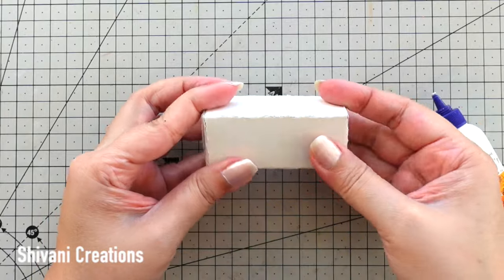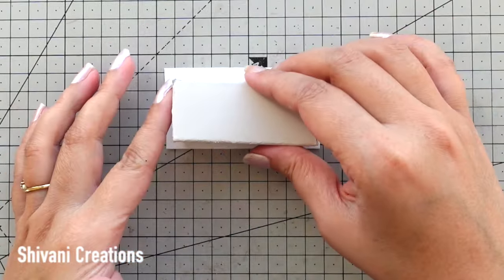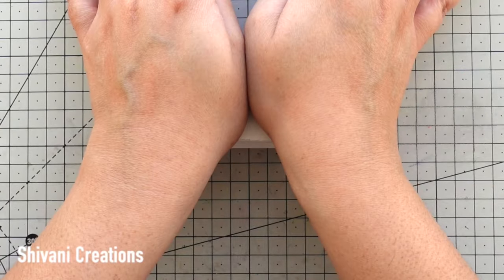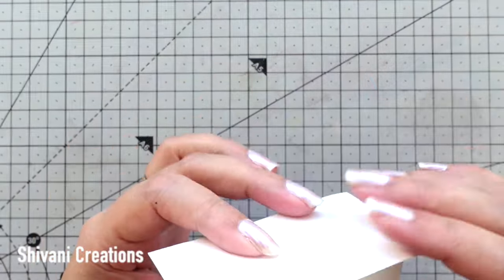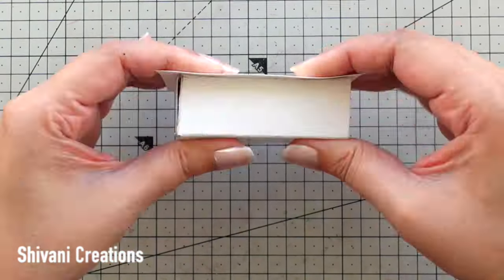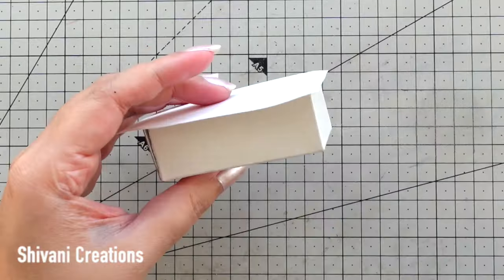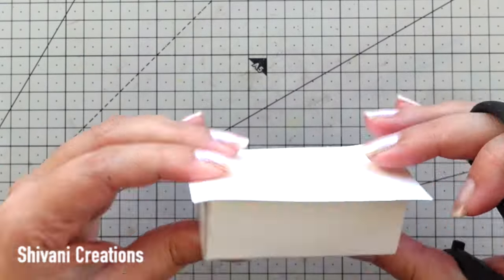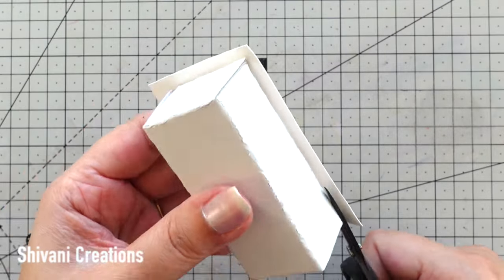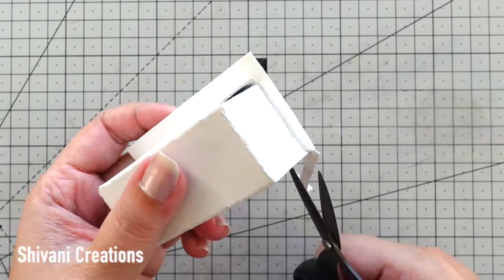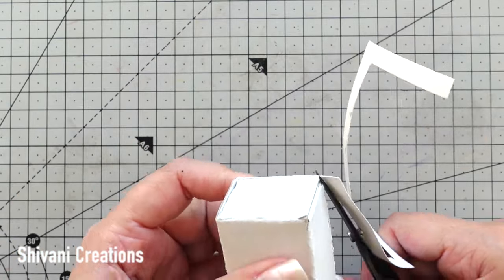So the box is ready. Here I am making the harmonium. Now taking one more white cardstock and sticking it in the bottom part of the box, then cutting the excess sheet from the edge. And the base for harmonium is ready.